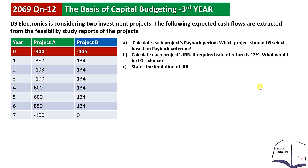We have a data investment project for LG Electronics. You can see the cash flows for Project A and Project B from Year 1 to Year 7. The initial cost of Project A is $300 and Project B is $405.